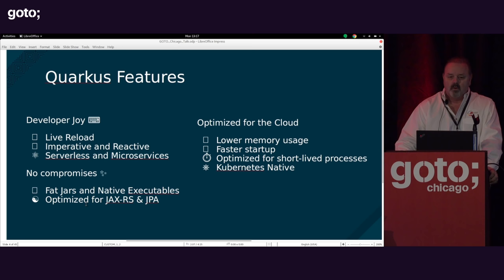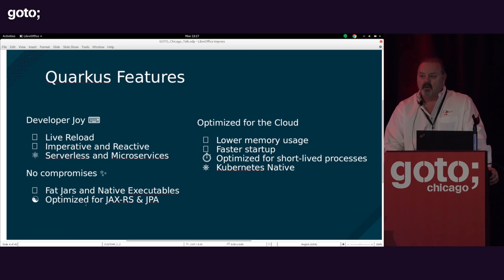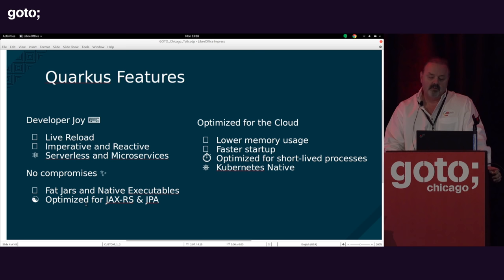The key features of Quarkus are along three different dimensions. The first is we really focused on the developer experience. What we want to do is take your existing runtimes that you're familiar with — all the Java Enterprise libraries, all the standard open source libraries — and make that a really good experience both from your desktop as well as the cloud. The other two pieces are merging imperative and reactive APIs, which are at times at odds, and being able to scale from serverless functions to full-blown microservices.